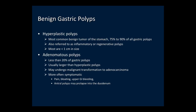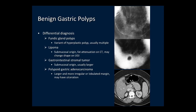If adenomatous polyps occur in the antrum, they can prolapse into the duodenum. On imaging, a polyp is a small protrusion into the lumen. On double contrast upper GI, it will be coated in barium; on single contrast, the polyp displaces the barium pool, producing a filling defect. On CT, it is a small nodular projection into the gastric lumen. Differential diagnosis includes fundic gland polyps, lipoma, gastrointestinal stromal tumor, and polypoid gastric adenocarcinoma, which are usually larger and more irregular with lobulated or ulcerated margins.